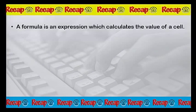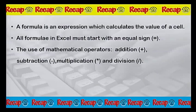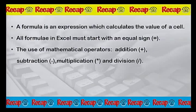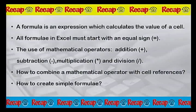This is the end of our quick test. I hope that you have been able to find all the correct answers. Now it's time to recap today's lesson. Today we have learnt that a formula is an expression which calculates the value of a cell, and all formulae in Excel must start with an equal sign. Excel uses mathematical operators such as a plus sign for addition, a minus sign for subtraction, an asterisk for multiplication, and a forward slash for division. We also looked at how to get these operators on the keyboard, how to combine a mathematical operator with cell references, and had a demonstration on how to create simple formulae. Dear students, thank you for your attention. I hope you have enjoyed today's lesson. Goodbye and see you soon for another lesson on Spreadsheet.